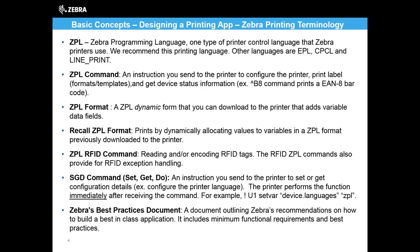We do support a number of other languages in the printers, but we recommend using ZPL for a number of reasons. A ZPL command is a specific instruction in ZPL used for configuring, creating a print label format, and getting status information. One example is the caret B8 — most ZPL commands start with a caret or tilde — and B8 tells the printer to print an EAN8 barcode. There are commands for printing barcodes, text, images, and getting status.